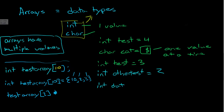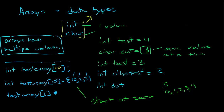One thing to keep in mind is that arrays start at zero. So if you have five values, it's really zero, one, two, three, four — that's five, but you don't go up to five because you include zero. So in our array, this would be index zero, this would be one, and this would be two. And if I had test_array[2], that would equal three, because two is referring to the third number — going zero, one, two, which is essentially one, two, three.